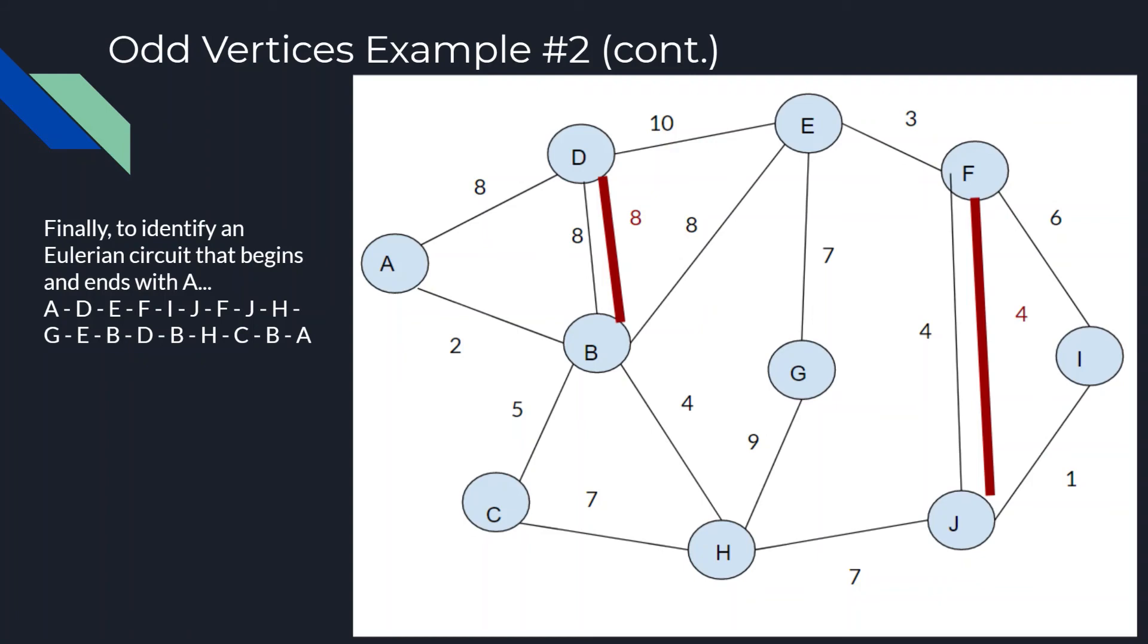Finally, we can identify an Eulerian circuit that begins and ends with A. In that case, we would be traversing from A to D, from D to E, from E to F, F to I, I to J, J to F and back down to J, J to H, H up to G, up to E and down to B. And from B, we can take the B to D and back to B route. Going from B, we can go to C, back to B, and finally reaching our node A.